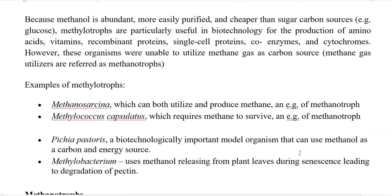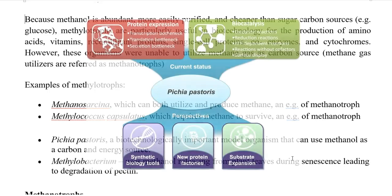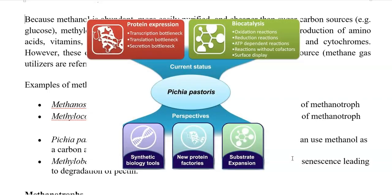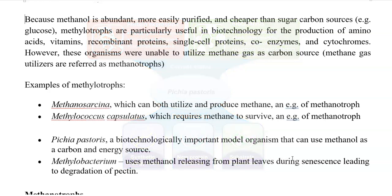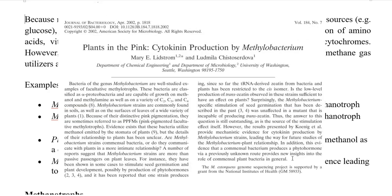Now we look at examples of methanotrophic bacteria. Methanosarcina, which has the ability to utilize as well as produce methane, is an example of a methanotrophic organism. Methylococcus capsulatus, which requires methane for its survival, is another example. Next is the yeast Pichia pastoris, a biotechnologically important model organism that uses methanol as both a carbon and energy source. Methylobacterium uses methanol released from leaves and has the ability to produce plant growth promoting hormones like cytokinin.